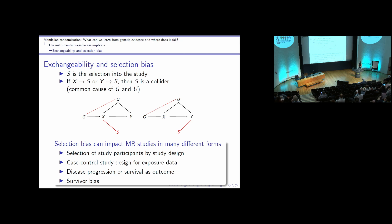Selection bias becomes an issue when a selection event determines which participants are part of our study, particularly when the exposure or outcome causes the selection — the selection event then becomes a collider. Selection bias can arise from selection of study participants by study design, for example using case-control data for exposure data. Other examples include disease progression or survival as an outcome, where we can only study survival if an individual has already gotten the disease.